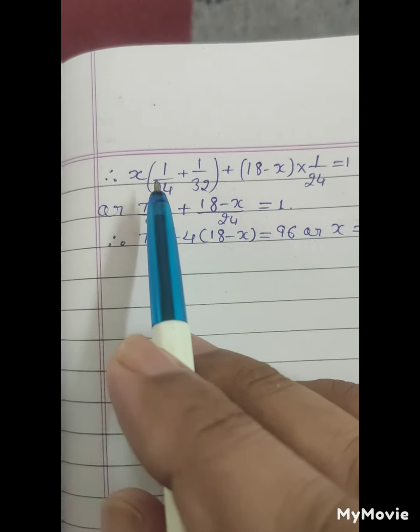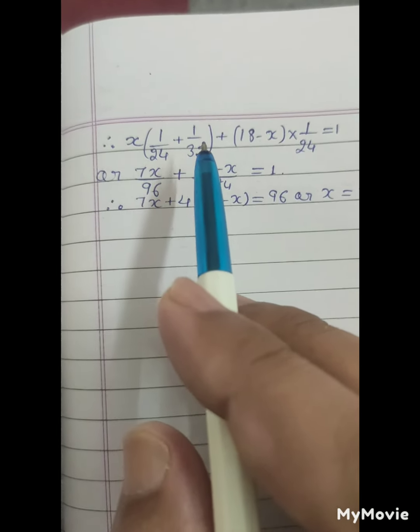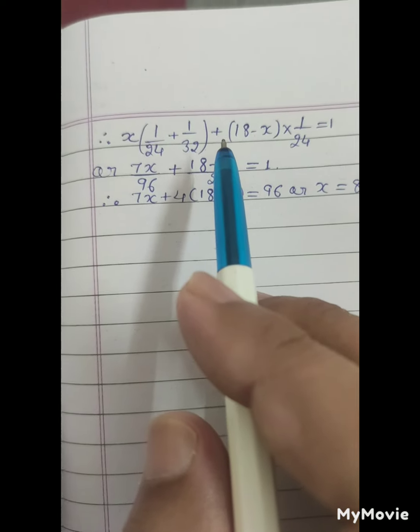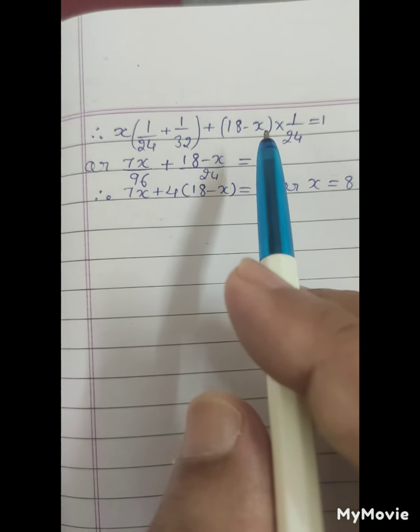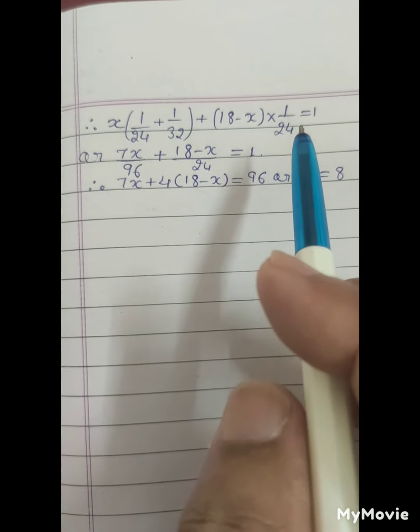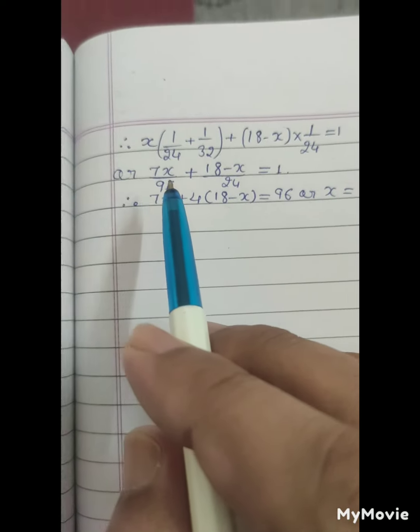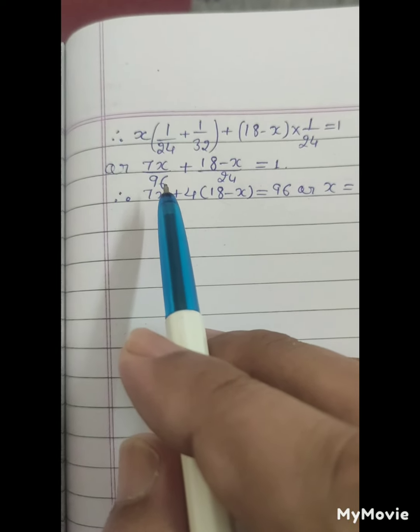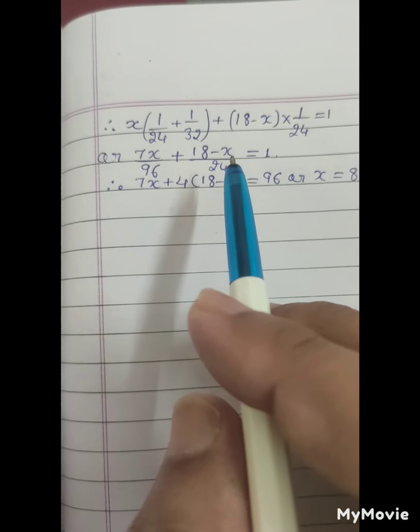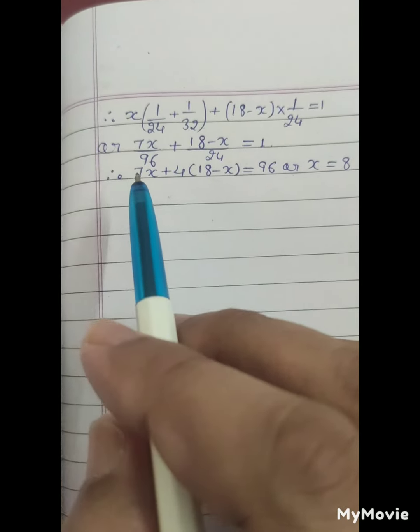So X into 1 upon 24 plus 1 upon 32 plus 18 minus X, 1 upon 24 equals to 1. Or 7X upon 96 plus 18X upon 24 equals to 1.